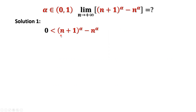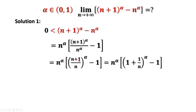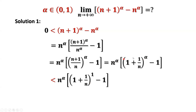We can factor out n to the power of alpha. We can rewrite this fraction as (n plus one) divided by n, to the same power alpha. Then split the inside part: n divided by n equals one, plus one over n. Because this part is positive and alpha is between zero and one, we can increase this number by replacing alpha by one. That means this part is less than n to the power of alpha times (one plus one over n) to the power of one minus alpha.